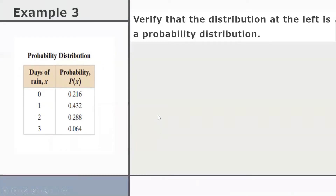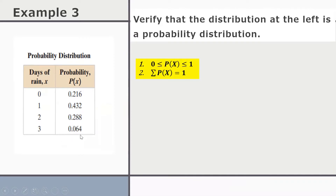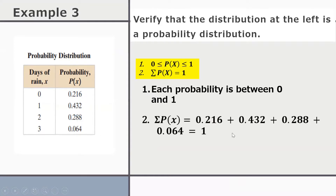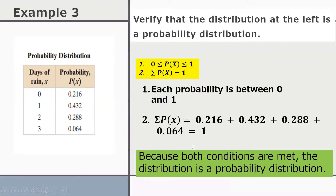Example 3: Verify that the distribution shown is a probability distribution. Both properties must be satisfied. Property 1: each probability is between 0 and 1 — satisfied. Property 2: when you add all the probabilities, the sum equals 1 — satisfied. Since both properties are met, the given distribution is a probability distribution.